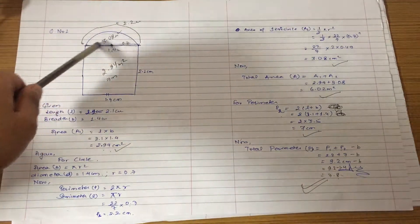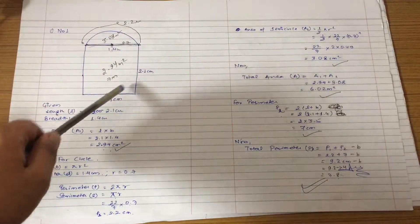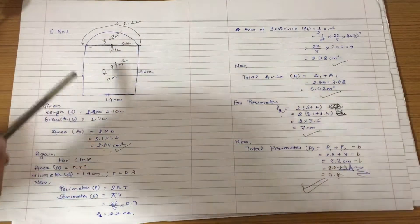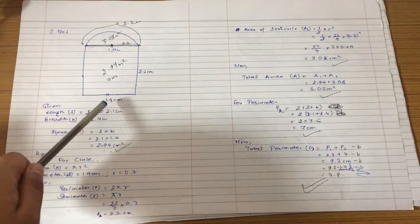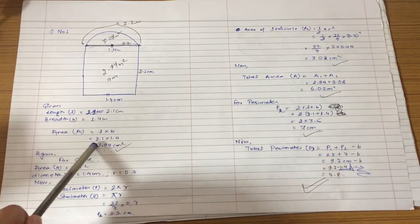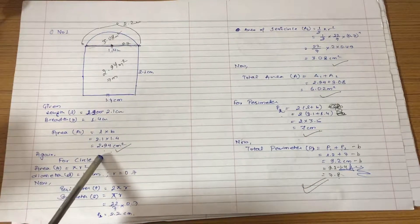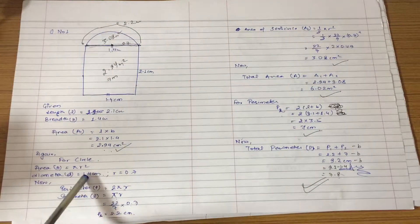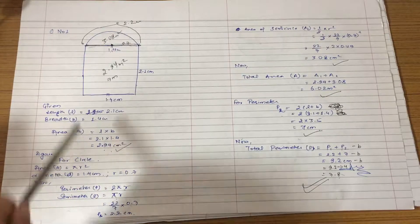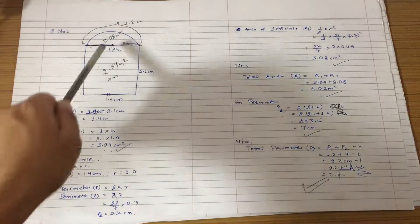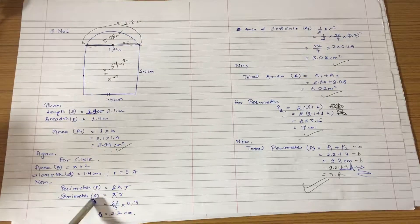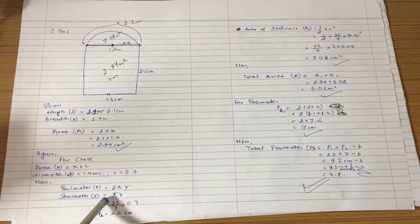In this question, we have given the length and breadth. This is 2πr. This is the semi-perimeter. It will be 1 by 2 into 2.